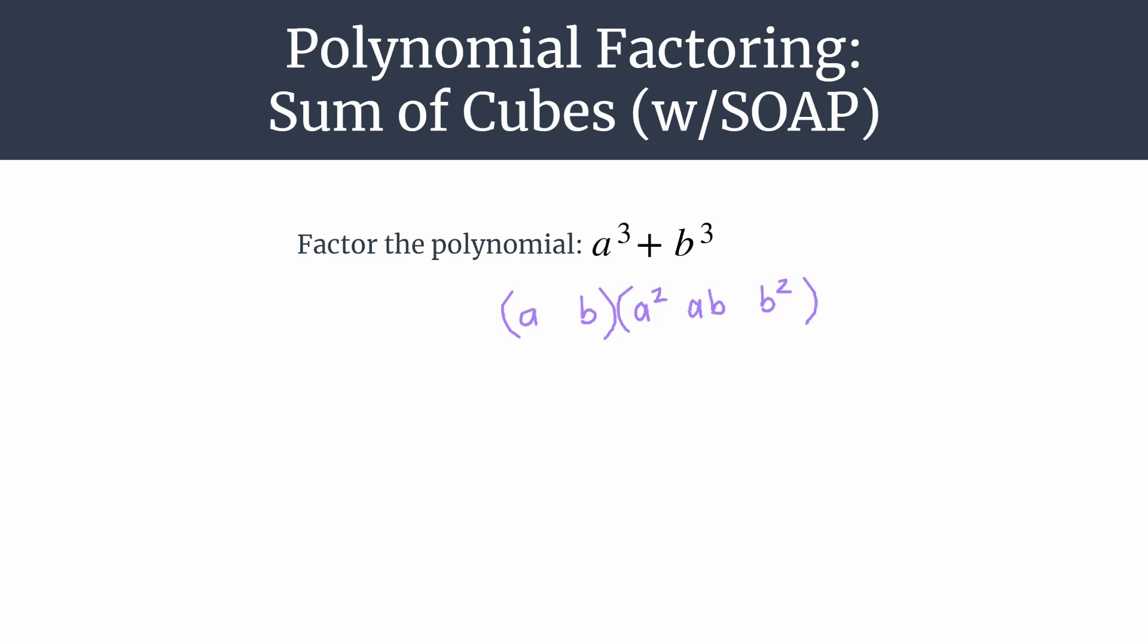So you have the setup with the a and b, and now we're going to use that acronym SOAP to fill in the three signs that are missing. So between the binomial terms and then the trinomial terms.